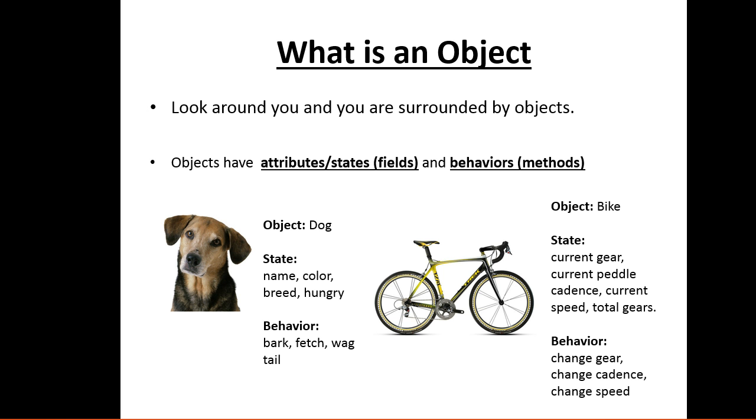An object could be a bike. The state could be current gear, current pedal cadence, current speed, total gears. A behavior could be you change the gears, change the cadence, change the speed.